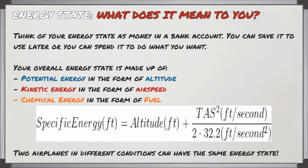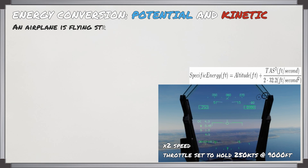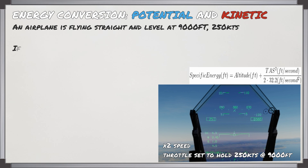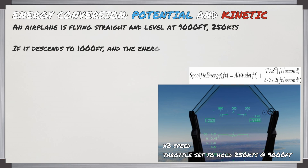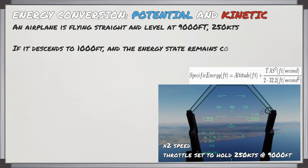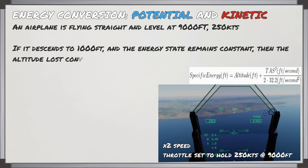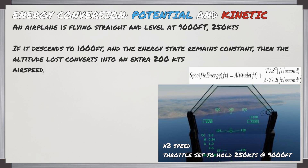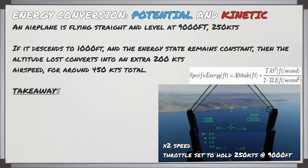What we're going to do here is look at the conversion from potential energy into kinetic energy using the F-18 Hornet. Flying straight and level at 9,000 feet, 250 knots with constant thrust — if I pitch the nose down and descend to 1,000 feet with the energy state remaining constant, the altitude we lose will convert into an extra 200 knots, giving us around 450 knots of total airspeed.